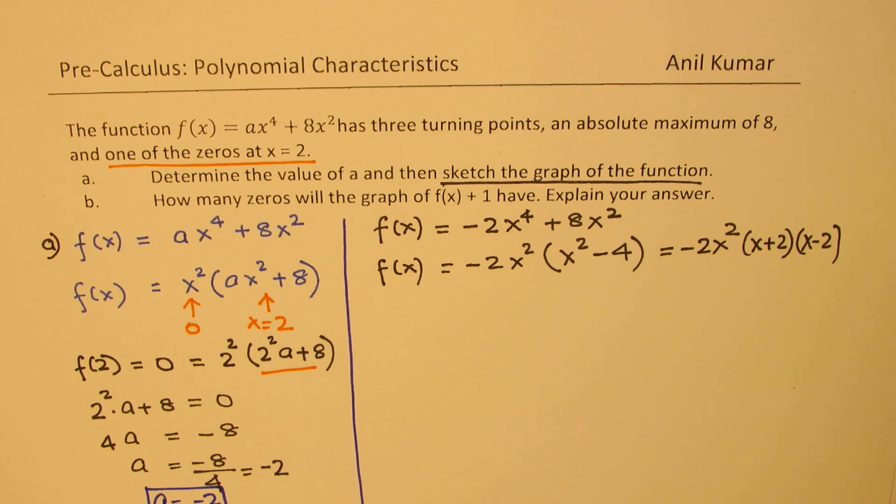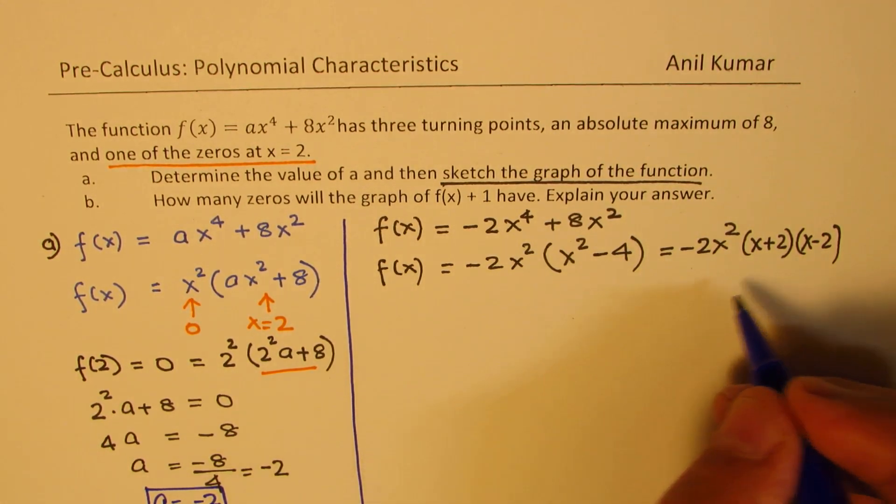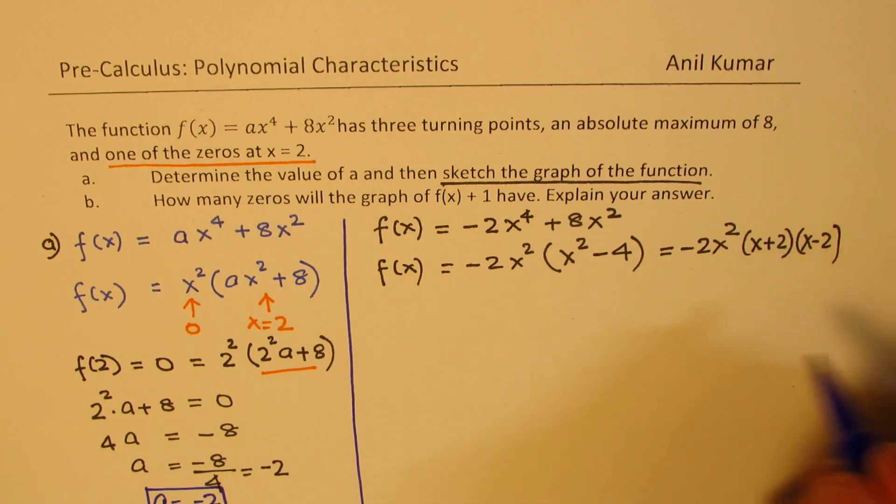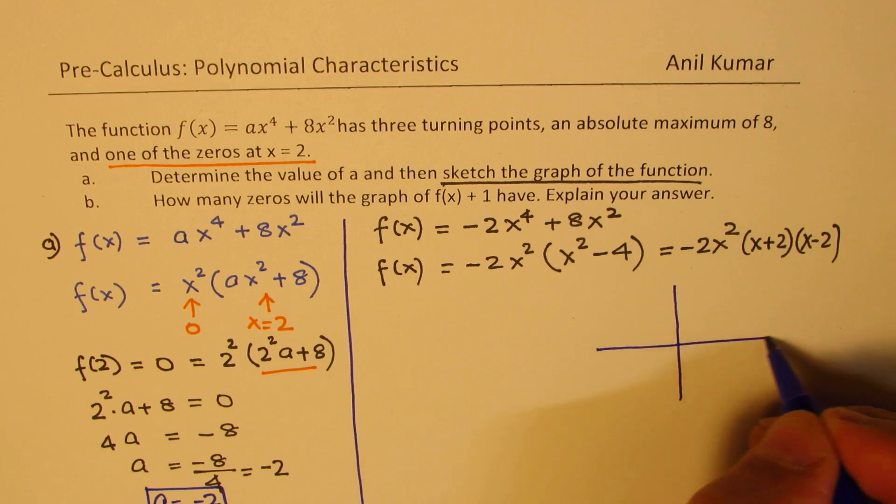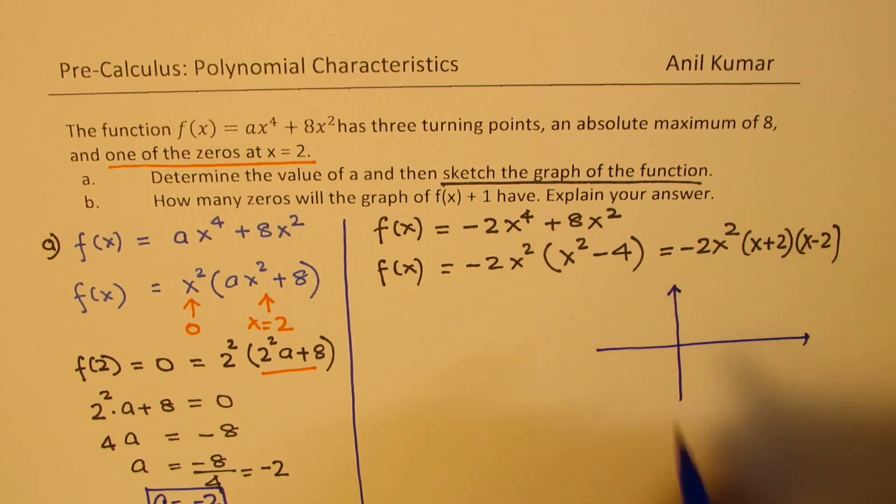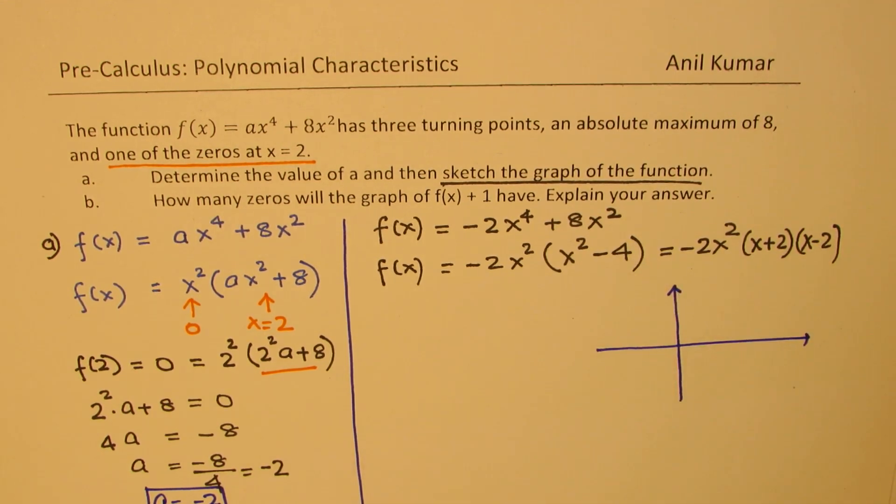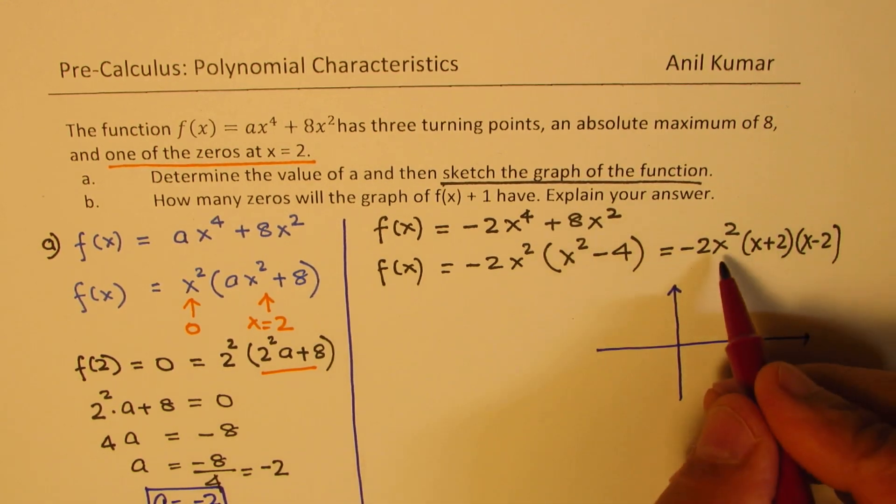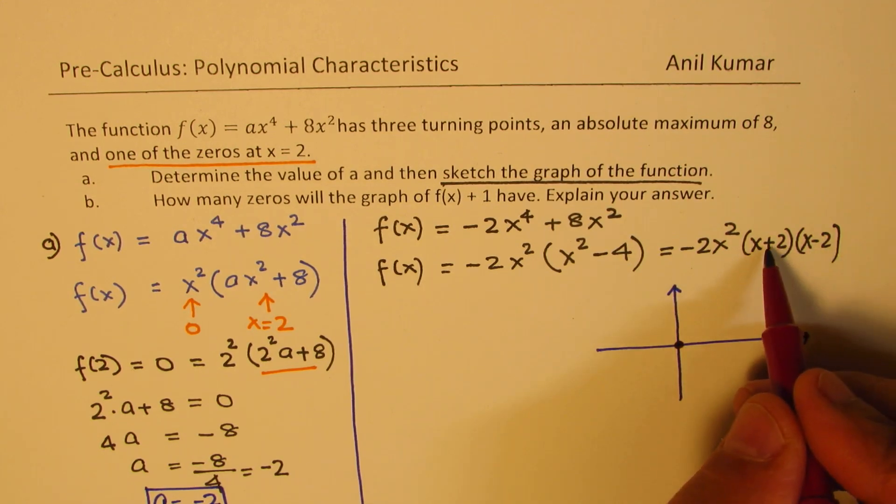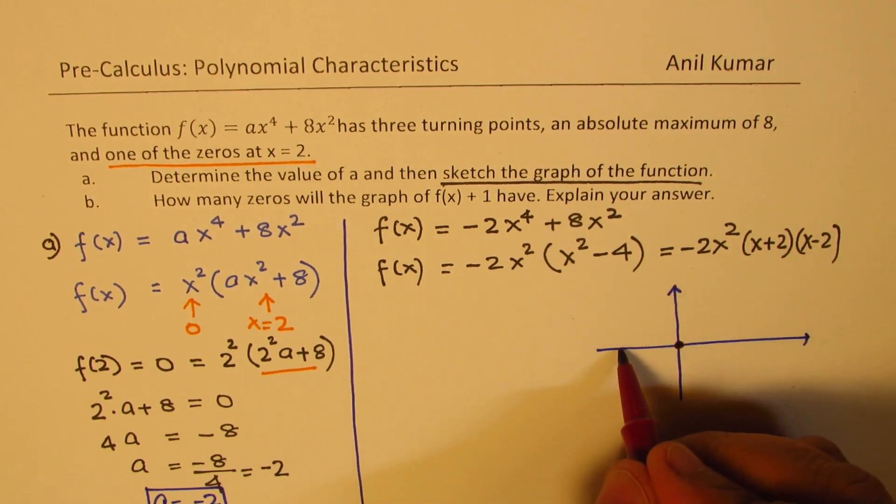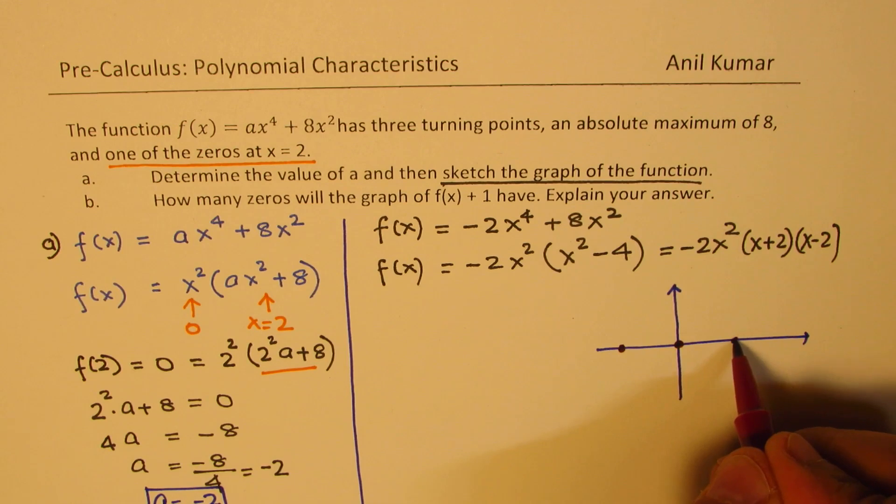To sketch the graph, let's mark the zeros. We have zeros at 0, plus and minus 2. We will sketch the graph here on this side. We have a zero at x equals 0 and the order of this zero is 2. And then we have a zero at plus and minus 2. That is minus 2 and this is plus 2.